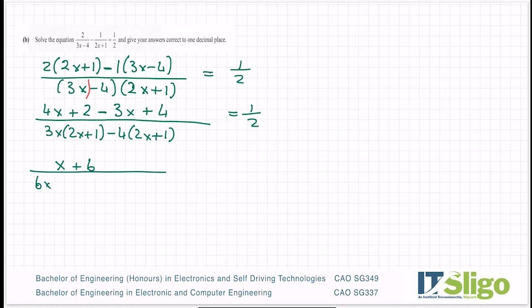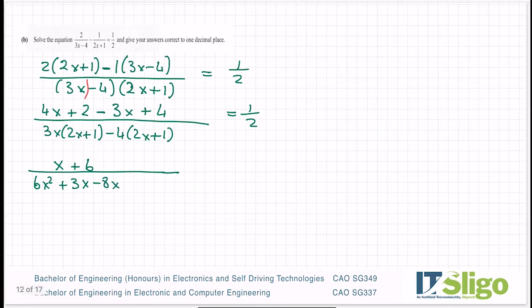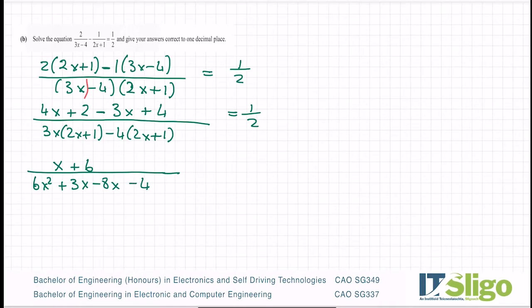And then in this one I want to split the bottom line. So 3x by everything in the second bracket minus 4 by everything in the second bracket. Let's multiply out the bottom line. 3x by 2x is 6x squared. 3x by 1 is 3x. Minus 4 by 2x is minus 8x. Minus 4 by plus 1 is minus 4. It's equal to one-half. So let's tidy up the bottom line now. We have 6x squared plus 3x minus 8x is minus 5x minus 4. And it's still equal to one-half.